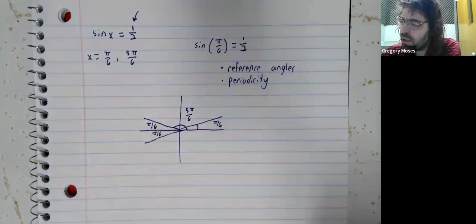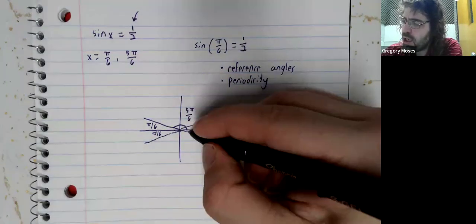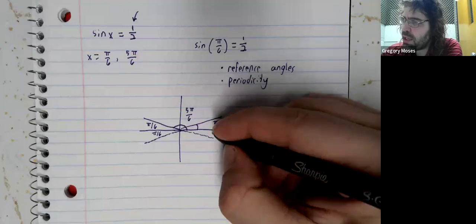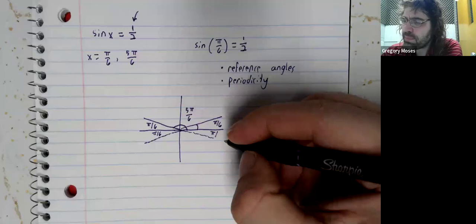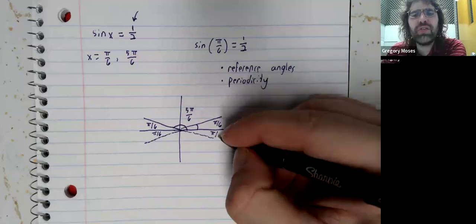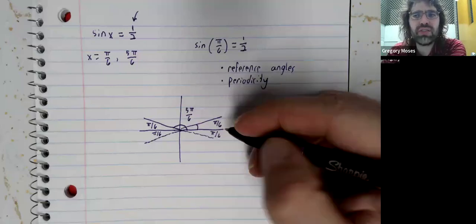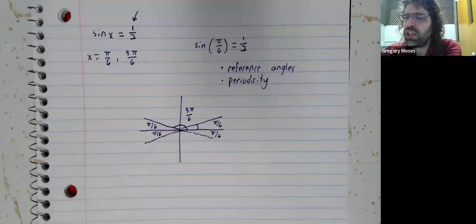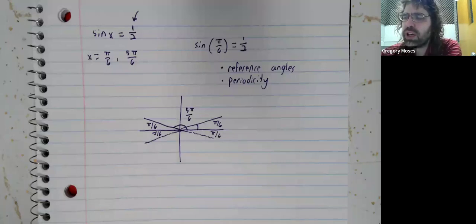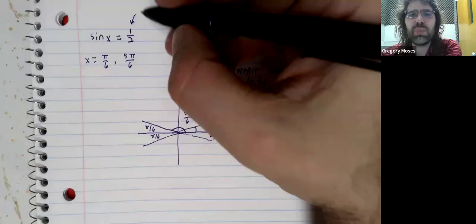Similarly, 11 pi over six, the angle in the fourth quadrant that has this reference angle, is invalid too. It's not a solution, again, because we're looking for where the sine is positive.